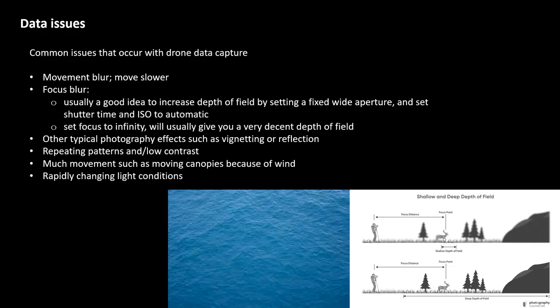Various issues can occur with drone data capture. The first and obvious one is movement blur. Drones are flying during sensor data capture, which can cause movement blur — a problem not only for the image itself but also for photogrammetric post-processing. The obvious solution is to fly slower, or even hover still during every photograph, depending on how serious this issue is for your application. The second problem is focus blur, which can be tricky because it is not always easy to see on the live feed screen whether images are actually sharp or slightly out of focus.